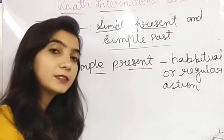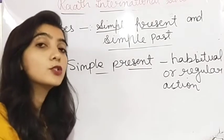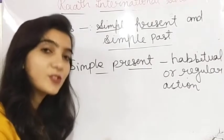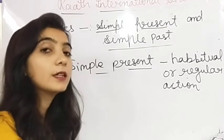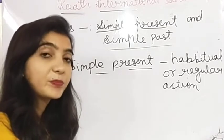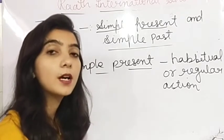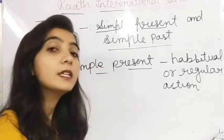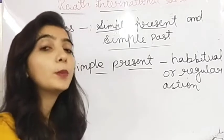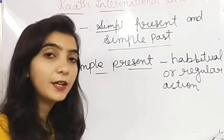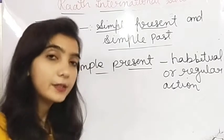We also use simple present tense when we talk about universal truths — things that are always true. For example: the sun rises in the east, the sun sets in the west, the earth revolves around the sun. These are things we can't change, so we use simple present tense to express them.